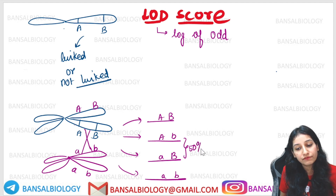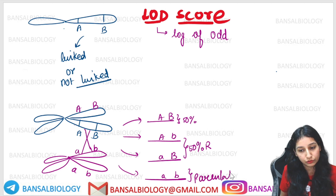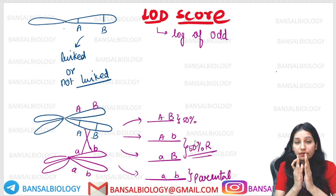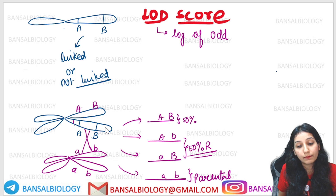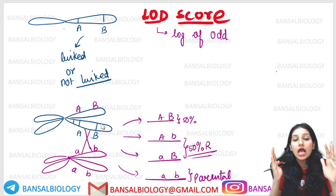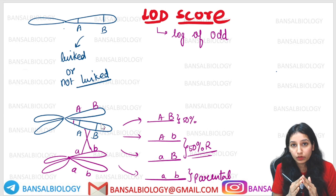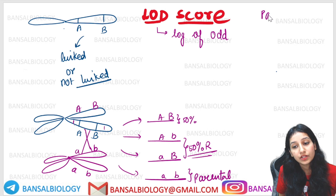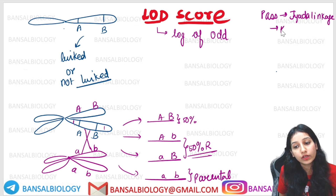We can see that 50% recombination occurs here and 50% are parental type. But when these two genes are very far apart, the recombination will be less. The closer the genes, the less recombination there will be.